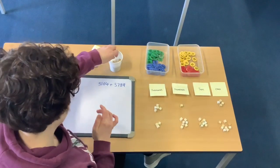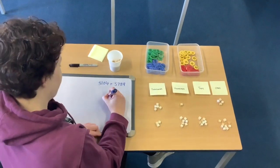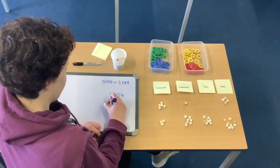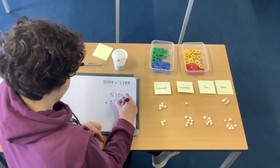So again I'm going to lay out my calculation in the column method. So 5,104 added to 3,789.